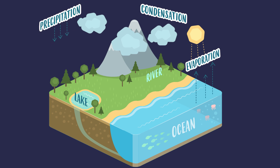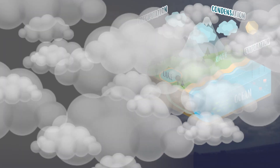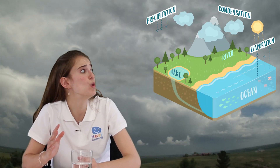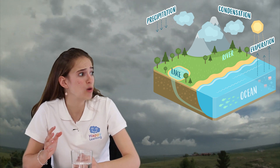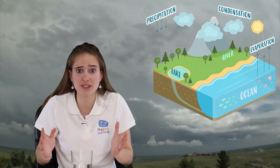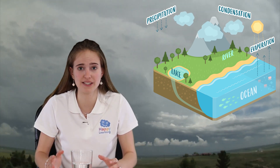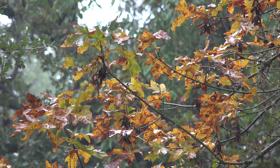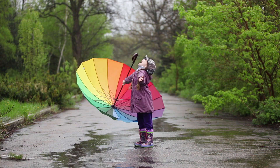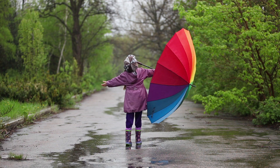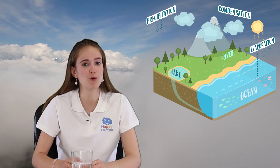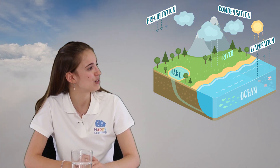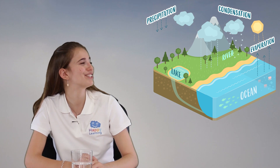Precipitation! The clouds can no longer hold all these water droplets so they fall. They precipitate onto the earth in the form of rain, hail or snow.